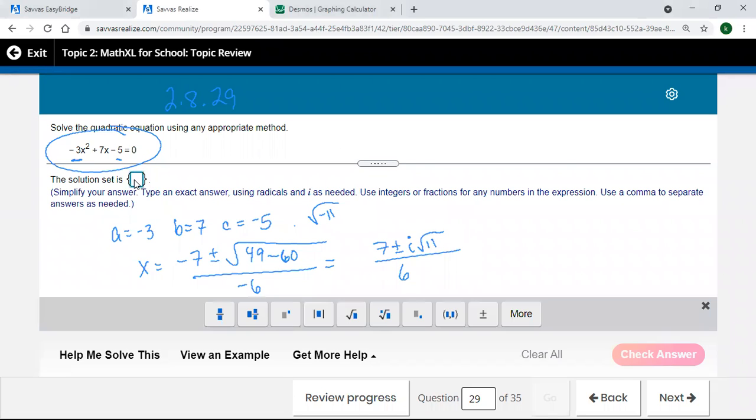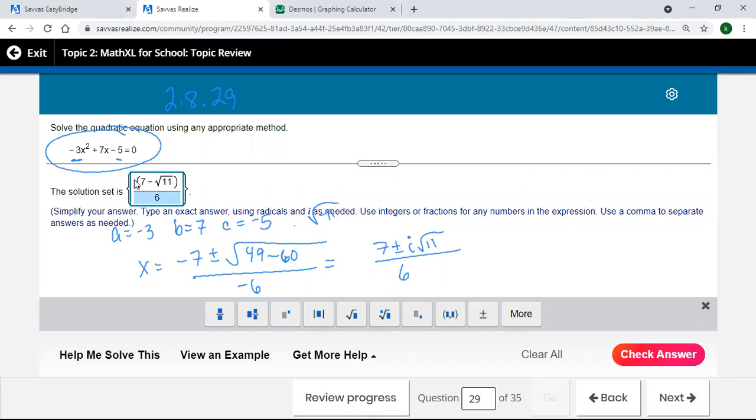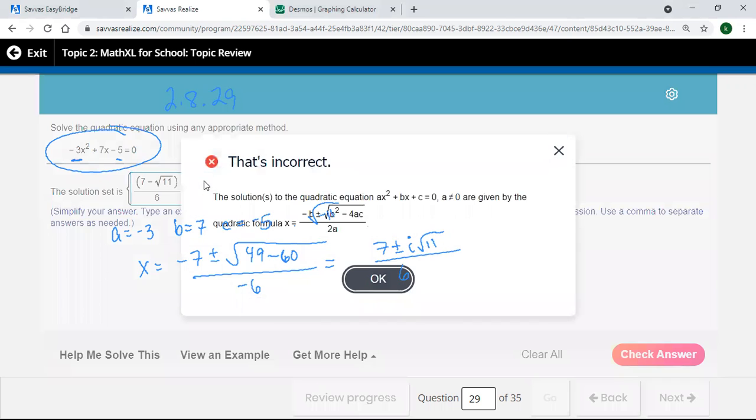So I need my 7 minus my square root of 11. You can use the square root button on the bottom if you want. I prefer to use the keyboard. All over 6. And then just to make it hopefully easier, I'm going to highlight it. Control C to copy, or to the right to get to the end of it. Comma. Control V to paste it. Click and change that minus to a plus. And see how we did.